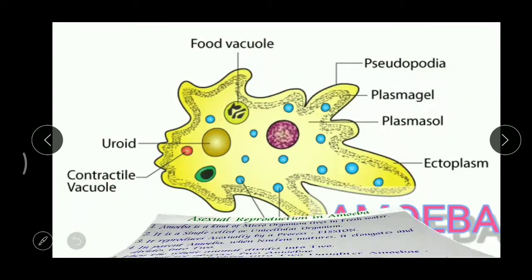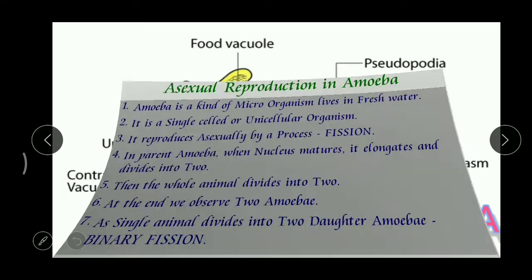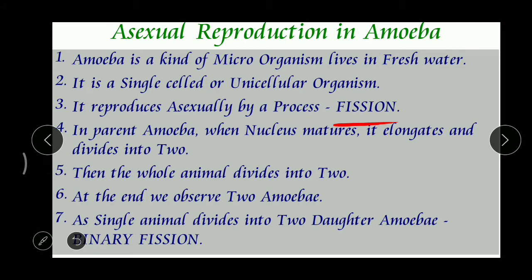We already know about amoeba, which is said to be a unicellular organism. Unicellular means the entire animal is made of only one cell, that's why we call it a unicellular or single-celled animal. It lives in water — some in fresh water and some in marine or salt water. This animal reproduces by an asexual process, and we call that process fission.